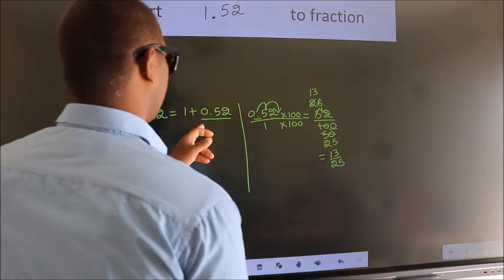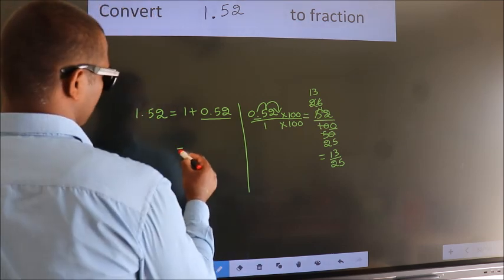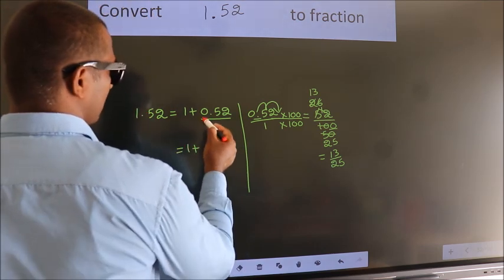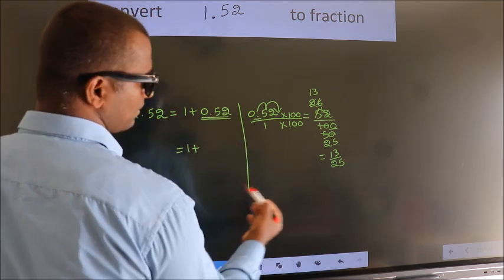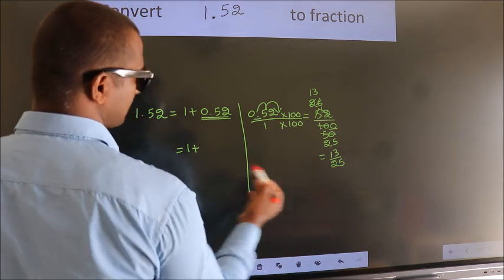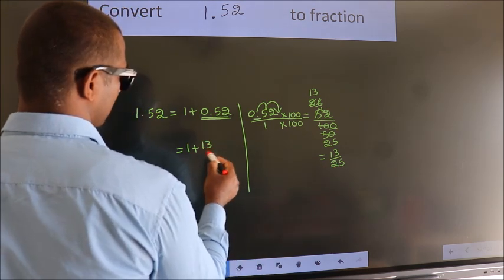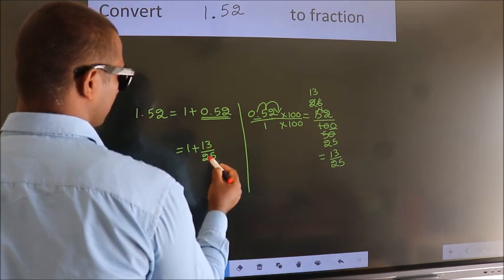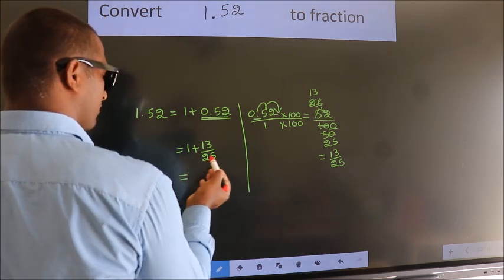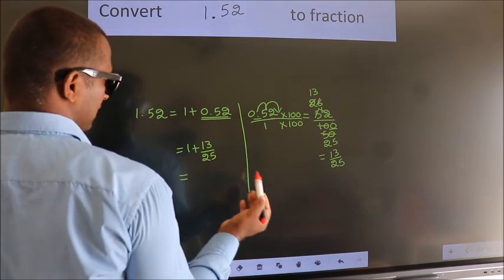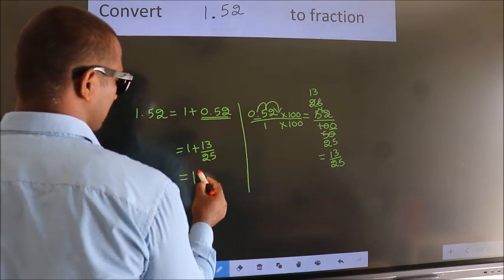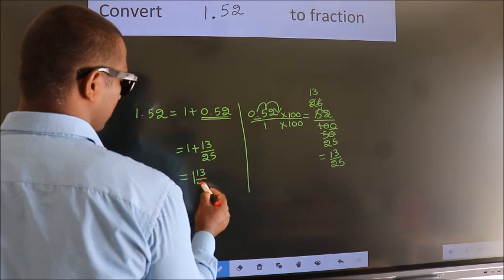Now here, 1 plus, in place of 0.52 I write this fraction, 13 by 25. So 1 plus 13 by 25 in mixed fraction is 1 and 13 over 25.